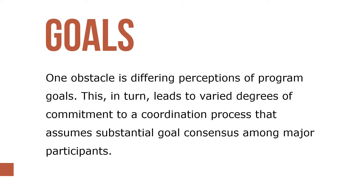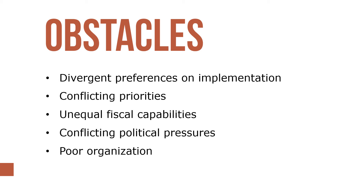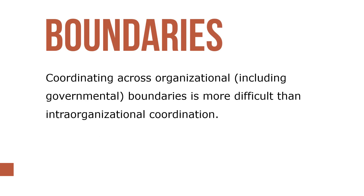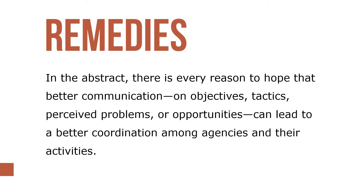One obstacle is differing perceptions of program goals, which leads to varied degrees of commitment to a coordination process that assumes substantial goal consensus among major participants. Other obstacles are divergent preferences on implementation, conflicting priorities, unequal fiscal capabilities, conflicting political pressures, and poor organization. Coordinating across organizational, including governmental, boundaries is more difficult than intra-organizational coordination. In the abstract, better communication on objectives, tactics, and perceived problems or opportunities can lead to better coordination among agencies.